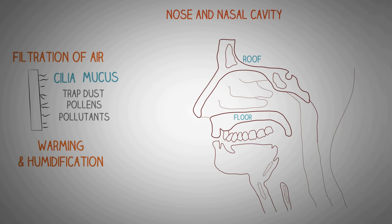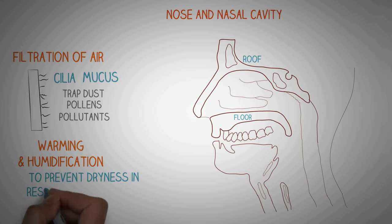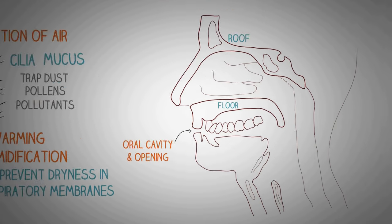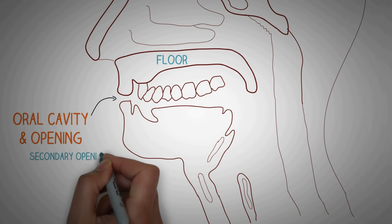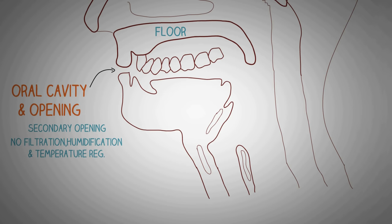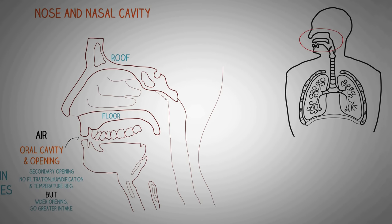The nasal cavity also performs warming and humidification of the air, which prevents dryness in the respiratory membranes. The oral cavity also serves as a secondary opening for the respiratory tract. The downside is that there is no filtration, no humidification, and no temperature regulation through the oral cavity. However, the oral cavity has a wider opening, which facilitates greater intake of air during exercise. So the air we inhale passes through the nasal cavity or oral cavity into the pharynx.